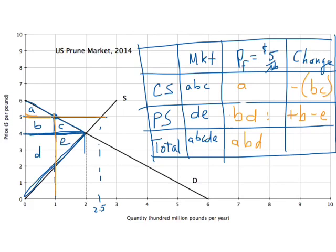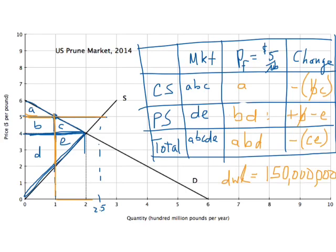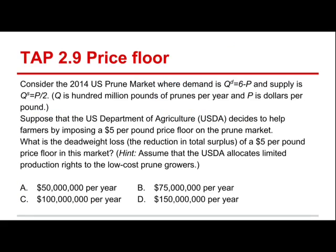Producers certainly can't sell the 250 million pounds they'd like to sell. So when we count up the welfare change: positive B and negative B cancel out. We're left with negative C and E as the deadweight loss. To calculate that — remember the quantity units are in 100 millions — this triangle has a height of 3 and a base of 1: one-half times 3 times 1 times 100 million gives $150 million per year. That was option D, the right answer.